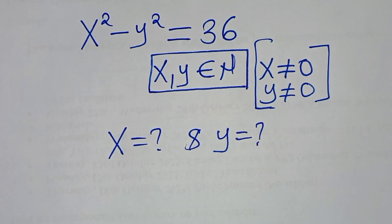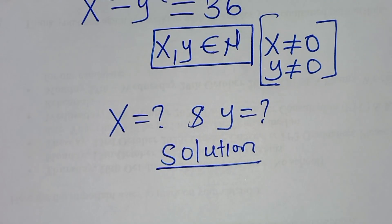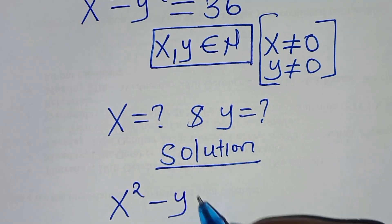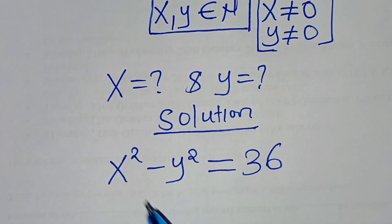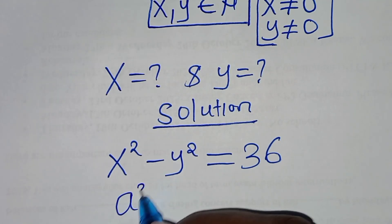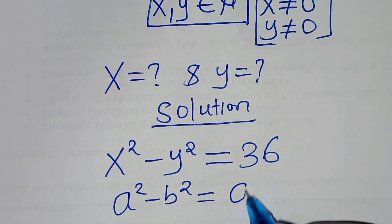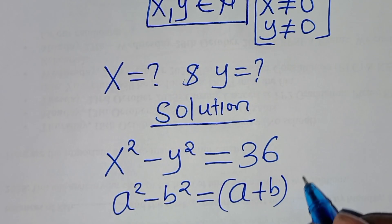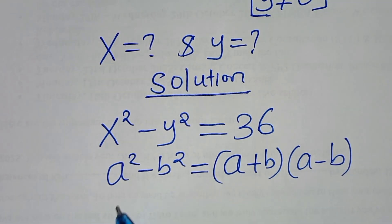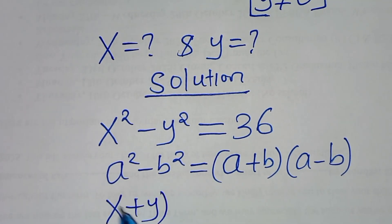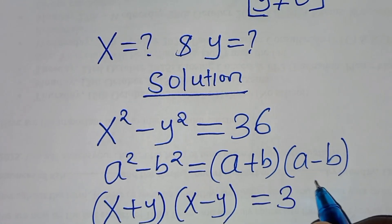Let's present the solution from here. We have x squared minus y squared equals 36. You find that this equation is in the form of a squared minus b squared, which is the difference of two perfect squares, which you can express as (a plus b)(a minus b). Applying this property, we have x plus y multiplying by x minus y, and this is equal to 36.